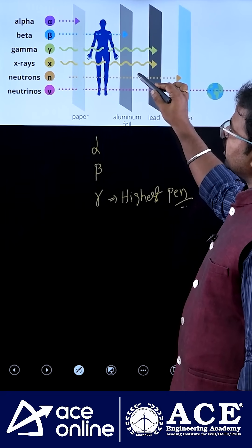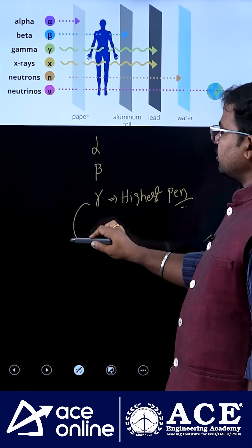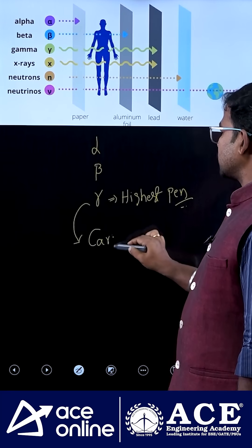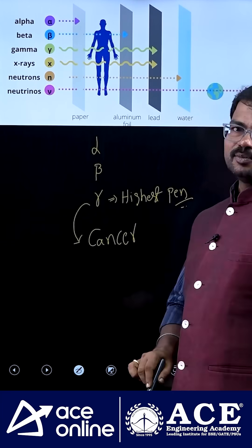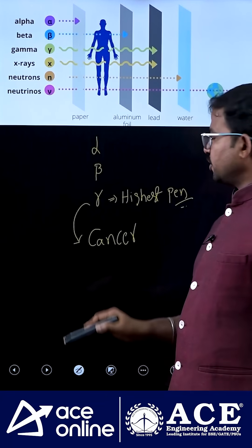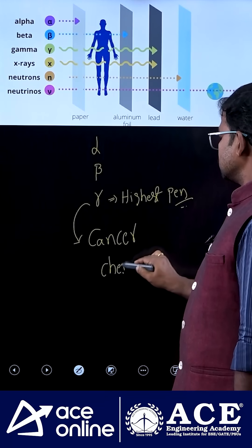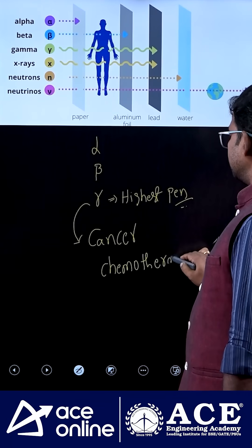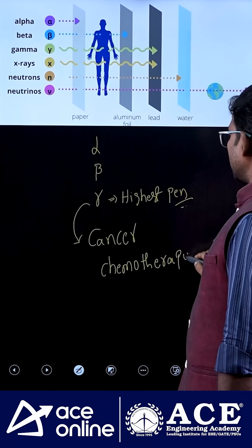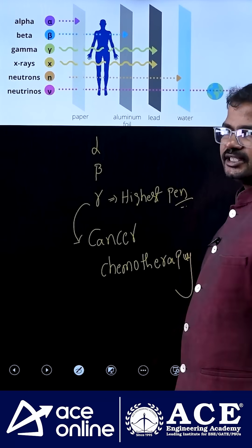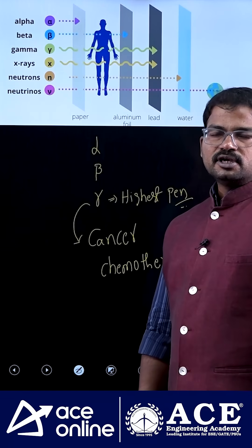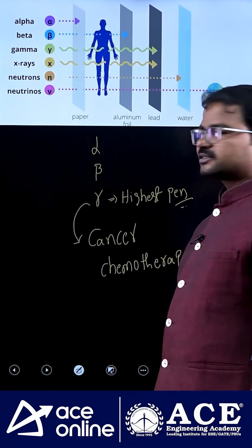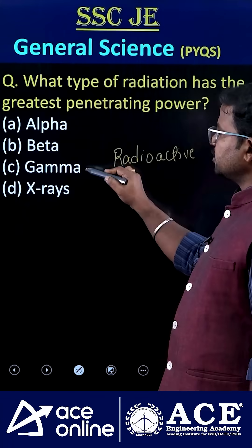You can observe that gamma rays are mostly used in cancer treatment — actually, chemotherapy. To reduce the size of tumors, we use gamma rays.